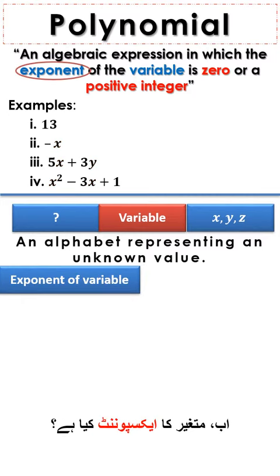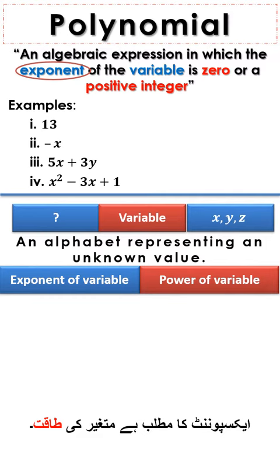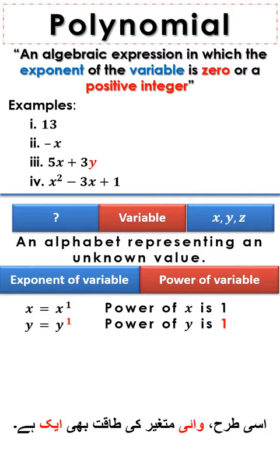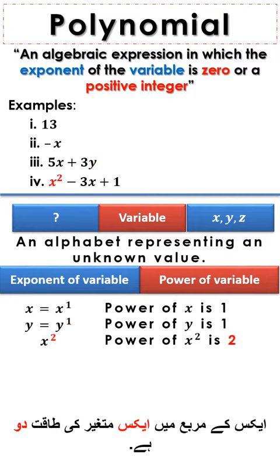What is exponent of variable? Exponent means power of variable. In above examples, the power of x variable is 1. Quantities with no power mentioned have a power of 1 in mathematics. Similarly, the power of y variable is also 1. The power of x square is 2.